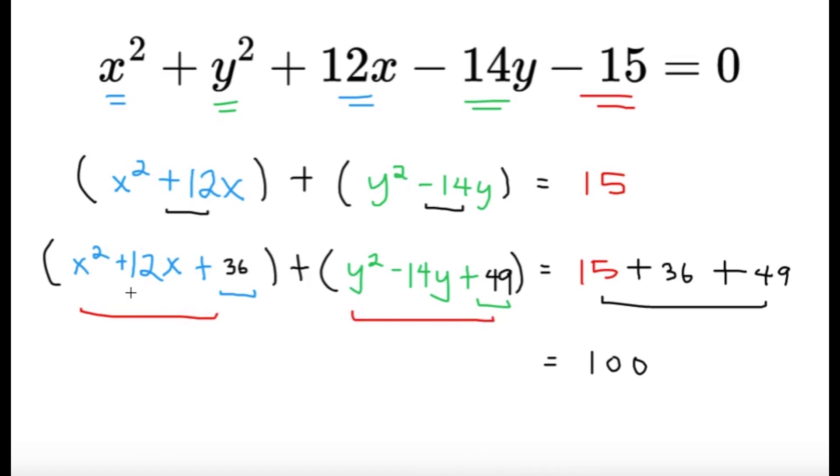Now all we have to do is just half the middle term. Same thing, we just half the 12 we're going to get 6, so this is factored into x plus 6 quantity squared. And for this part, the coefficient of y is negative 14, we're going to half it so that's negative 7, so this part is factored as y minus 7 quantity squared, and we have the circle in the center radius form.